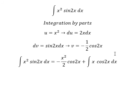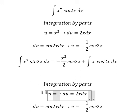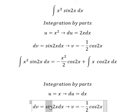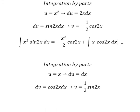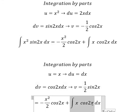Now we will use the same technique, but this one is u equals x, and this one you got du equals dx. This one we have dv equals cos 2x dx, and this one we have v equals 1 over 2 sin 2x.